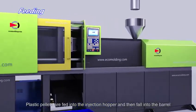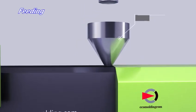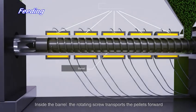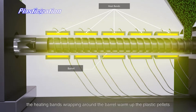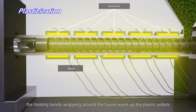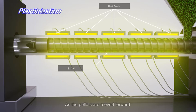Plastic pellets are fed into the injection hopper and then fall into the barrel. The rotating screw transports the pellets forward. The heating bands wrapping around the barrel warm up the plastic pellets.